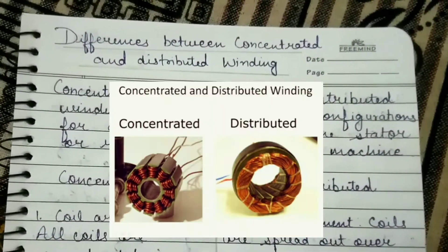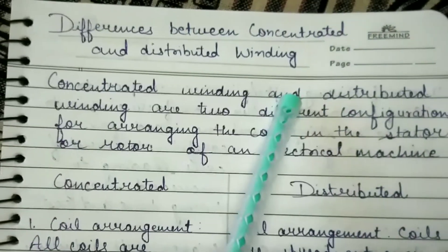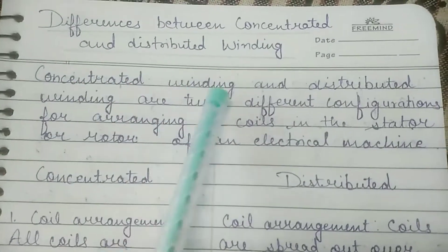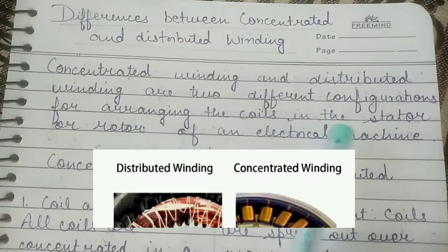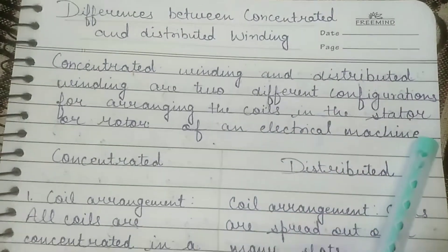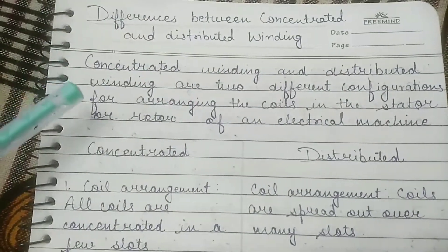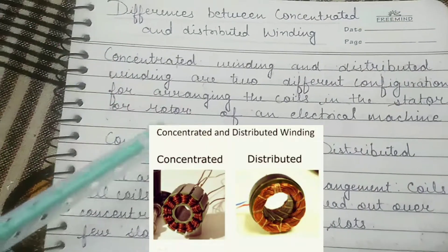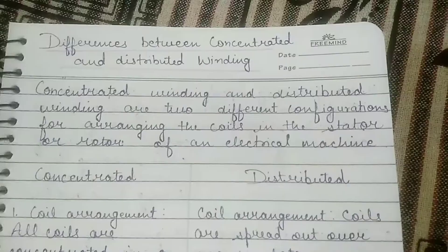Today I'm going to tell you about the differences between concentrated and distributed winding. Concentrated winding and distributed winding are two different configurations for arranging the coils in the stator or rotor of an electrical machine, such as motors or generators. They refer to how the coils of wire are arranged within the machine's stator or rotor.